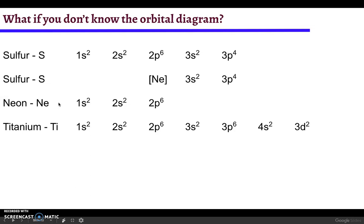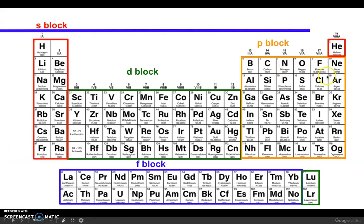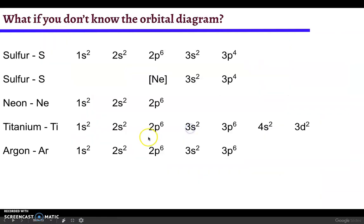You can also write an abbreviated version for titanium, and you can do that using argon. Argon ends at this is the third row and it's the sixth element in the p block. So you could write it as 1s2 2s2 2p6 3s2 3p6.